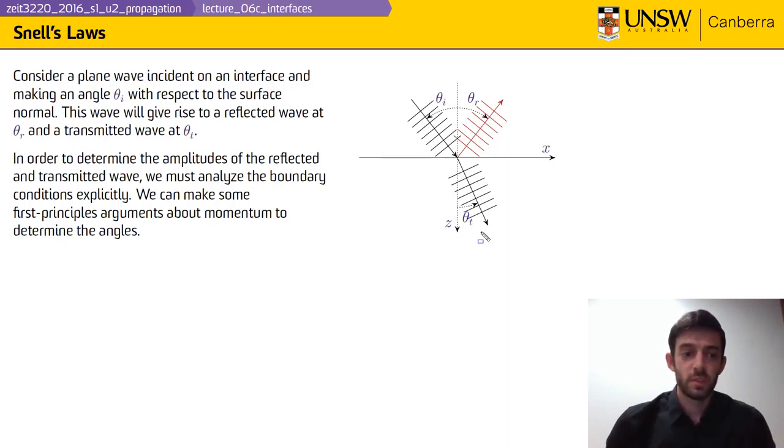To determine the amplitudes of the reflected and transmitted waves, we must analyze the boundary conditions, which are the rephrasing of Maxwell's equations that we have learned about before. From first principles of conservation of momentum, we'll be able to figure out what those angles need to be in order to satisfy those boundary conditions both for the reflected beam and for the transmitted beam.